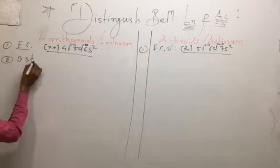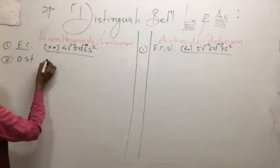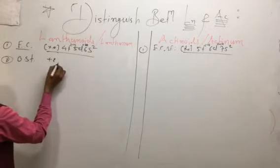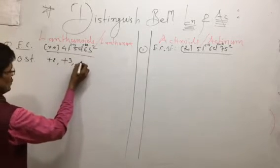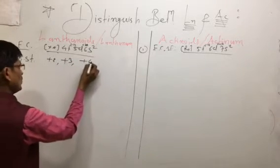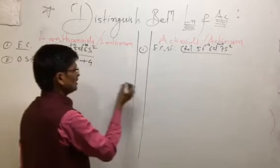Second point: oxidation state. For the lanthanoid series, the oxidation states shown are +2, +3, and +4.